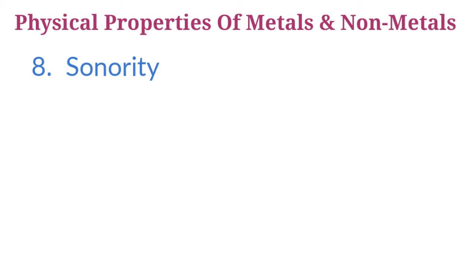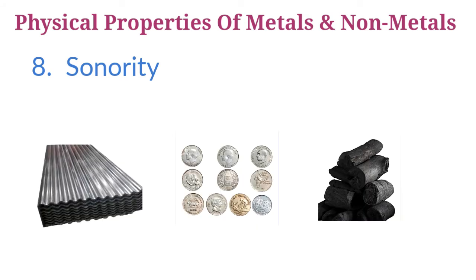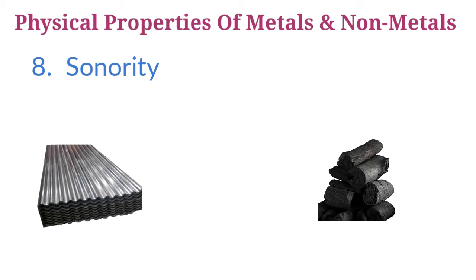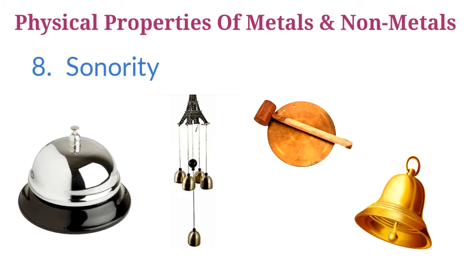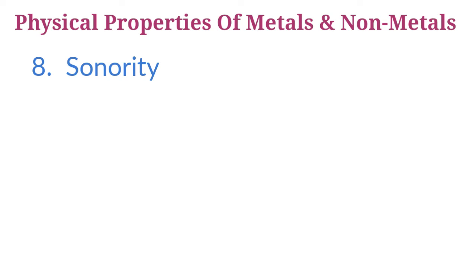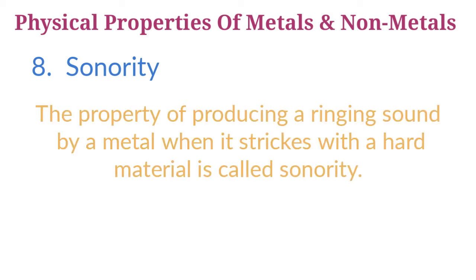Next property: sonority. Have you ever noticed the difference in sound when dropping an iron sheet, a metal coin, and a piece of coal on the floor? Things made of metal produce a ringing sound when struck hard. Suppose you have two similar-looking boxes, one made of wood and the other made of metal — you can tell which is metal by striking them. Since metals produce ringing sounds, they are said to be sonorous. The property of producing a ringing sound when a metal strikes a hard material is called sonority. Thus, metals are sonorous and are used for making bells and metal wires in musical instruments. Non-metals do not make a ringing sound when struck, so non-metals are non-sonorous.